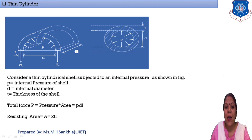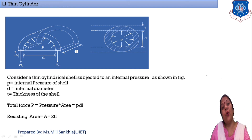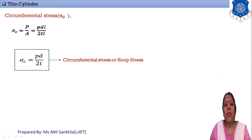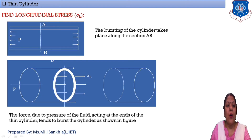The total force acting inside the thin cylinder equals pressure times area. For hoop stress, the area is d × l, so total force equals p × d × l. The resisting area consists of two thicknesses along the length, so resisting area equals 2tl. Therefore, circumferential stress or hoop stress σc equals load divided by area, which gives σc = pdl / 2tl = pd / 2t. This is the equation for circumferential stress or hoop stress.